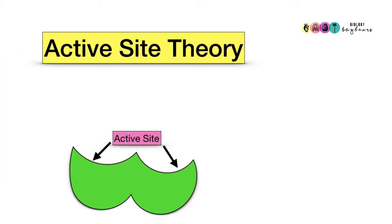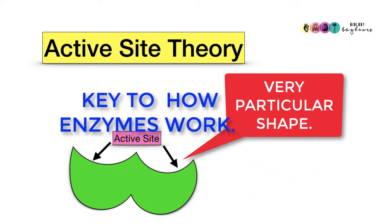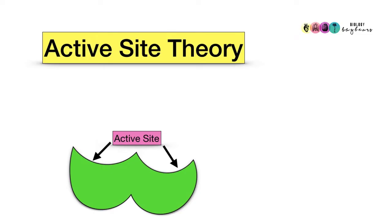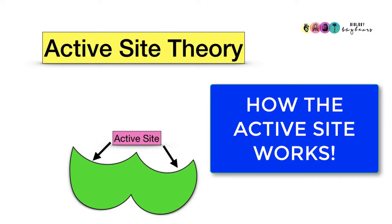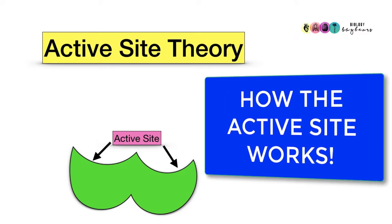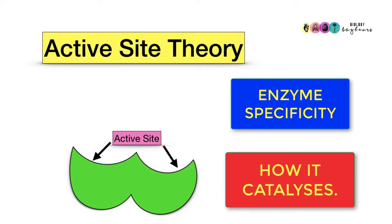Let's introduce active site theory. All enzymes have this uniquely shaped structure, a little bit like a depression on its surface known as its active site. This is key to how the enzyme catalyzes reactions. Active site theory explains how the active site on an enzyme works. You can use active site theory to explain enzyme specificity and how the enzyme actually catalyzes a reaction.